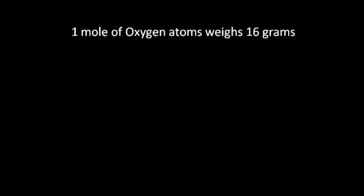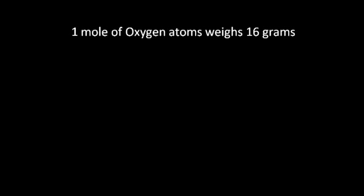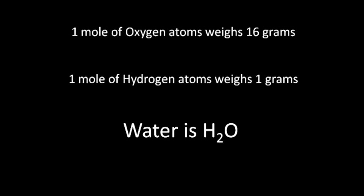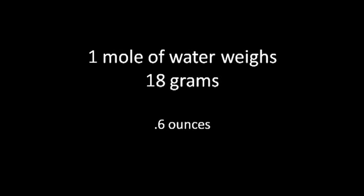The neat thing about using moles is that if we go to the periodic table of elements, it tells us how much a mole of different elements weighs. The periodic table tells us that one mole of oxygen atoms weighs 16 grams, and one mole of hydrogen atoms weighs one gram. We know that water is H2O — that's two hydrogens and one oxygen. So adding those numbers up, we can determine that one mole of water weighs 18 grams.